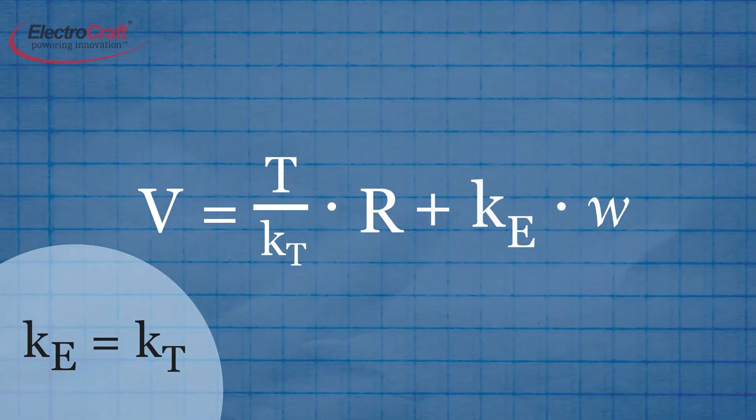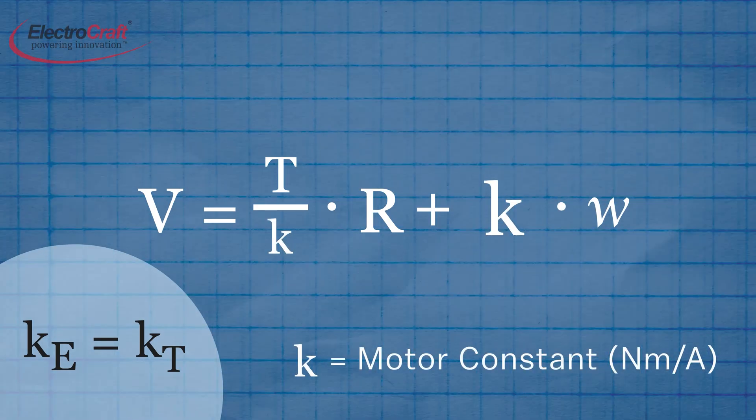For DC motors, the torque constant K sub T and the electrical constant K sub E are equal and can be replaced with K, the motor constant.